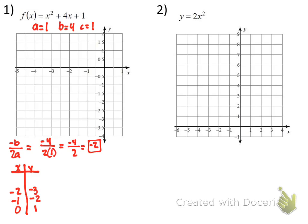Now I'll pick a couple of points in the opposite direction from negative 2: negative 3 and negative 4. Because of symmetry, I can copy the answers I already calculated. If I plug in negative 3: negative 3 squared is 9, 4 times negative 3 is negative 12, so 9 minus 12 is negative 3, plus 1 is negative 2. And for negative 4: negative 4 squared is 16, 4 times negative 4 is negative 16, so 16 minus 16 is 0, plus 1 is 1.